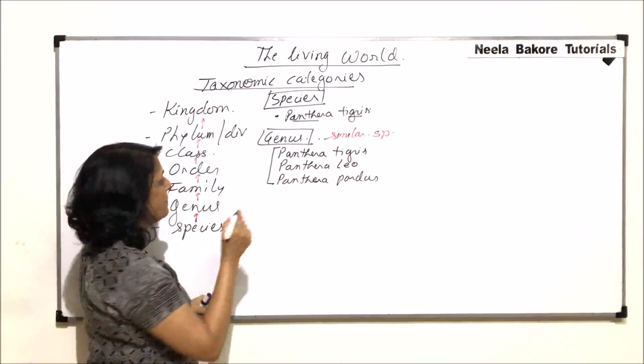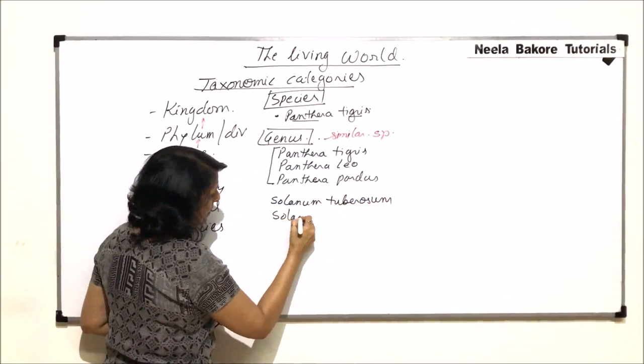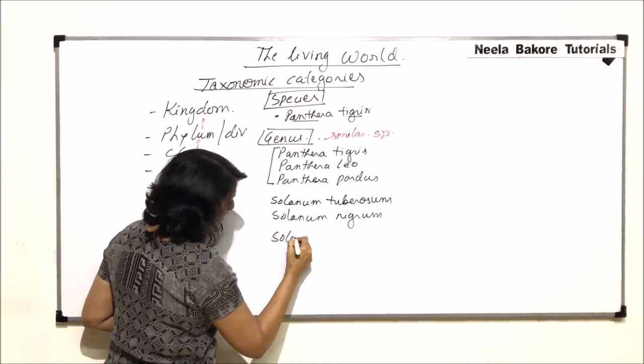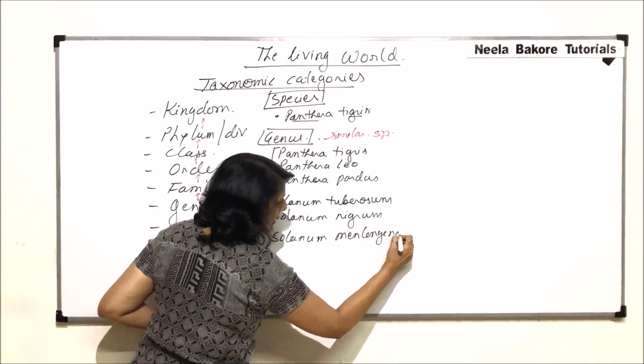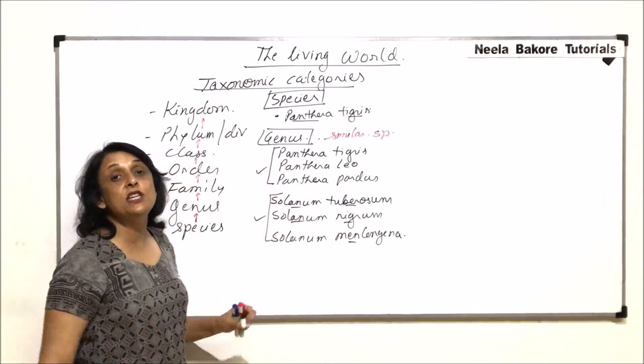Let us take one more example. If we talk of Solanum tuberosum, that is potato. Then Solanum nigrum, and Solanum melongena, that is brinjal. These three species are all placed in the same genus, Solanum.